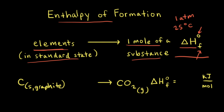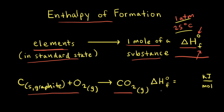When you think about the most stable form of oxygen under standard conditions — at one atmosphere and room temperature of 25 degrees Celsius — the most stable form of oxygen is oxygen gas, O₂. Since we're forming one mole of carbon dioxide from the elements in their most stable form under standard conditions, the change in enthalpy is the standard enthalpy of formation, denoted with subscript F and superscript not. The change in enthalpy for the formation of one mole of CO₂ is equal to negative 393.5 kilojoules per mole of carbon dioxide.